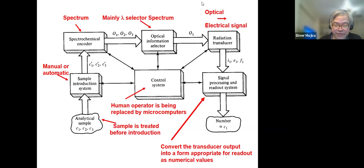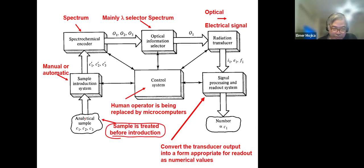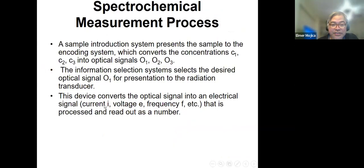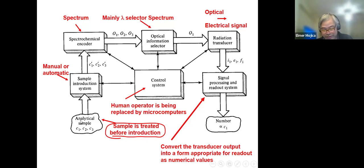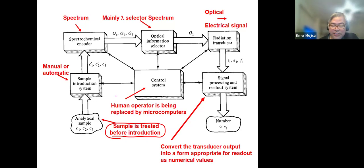Your sample is treated before the introduction. You have an analytical sample — it contains a certain concentration. Since you can't immediately put the sample in the cuvette, if it's a solid you have to make it into a liquid. What you're going to do is treat it before you introduce it to the sample holder, which can be manual or automatic.